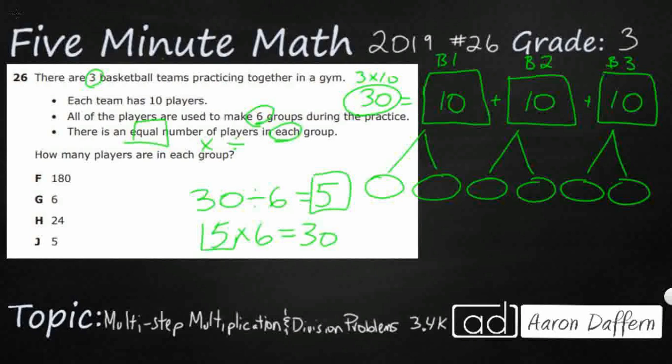But if you look at this picture, it also actually kind of splits itself up. If you take each of these teams of 10 and split them in half, you can get 5, 10, 15, 20, 25, and 30. So our answer here is going to be 5.